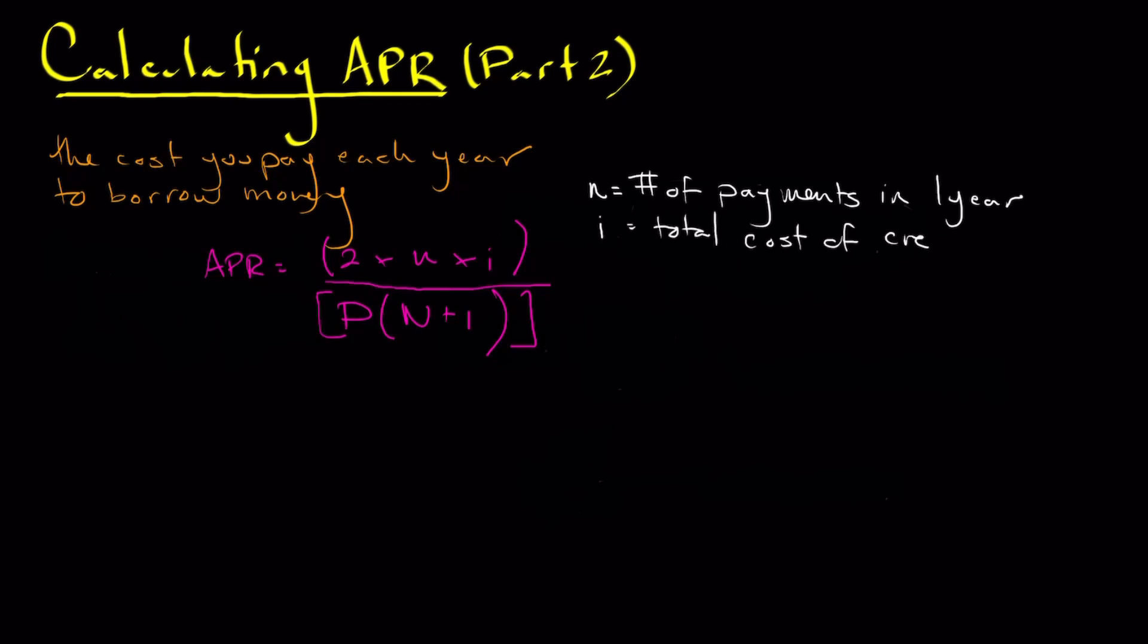What I show is i is going to be what we call the total cost of credit. In our last video, the finance charge that we calculated, which was the interest that we paid plus the service charge, essentially represented the total cost of credit, or in this case, i.